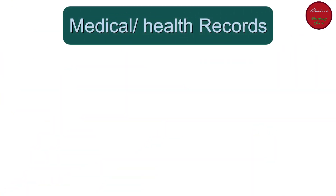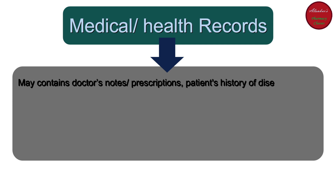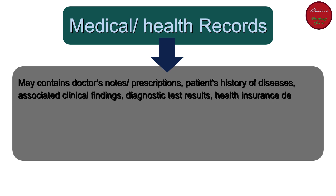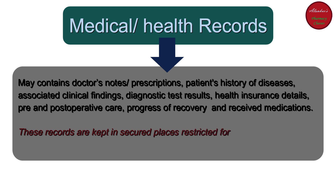The fourth type of record is the medical or health record. These records may usually contain doctor's notes or prescriptions, patient history of diseases, associated clinical findings, diagnostic test results, health insurance details, pre- and post-operative care, progress of recovery, and received medications.